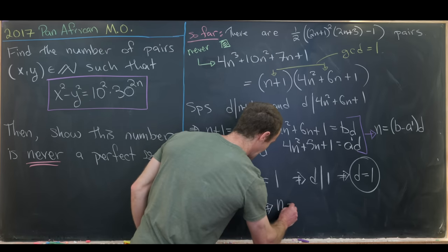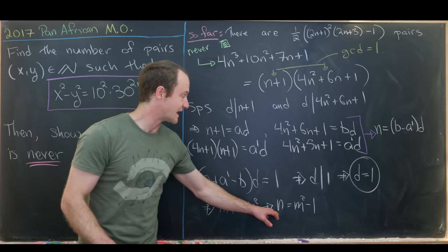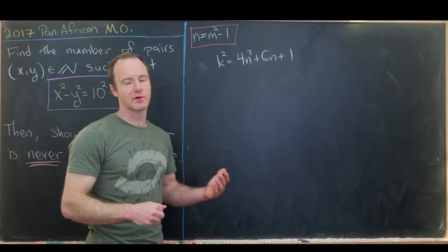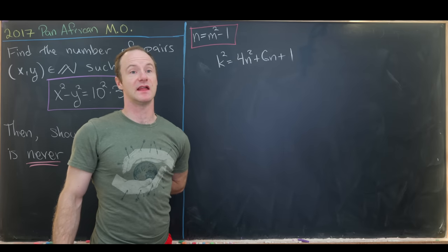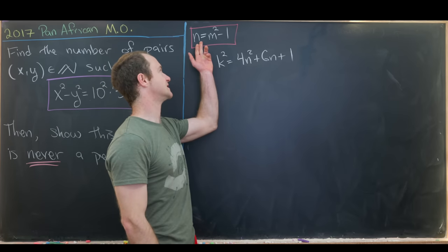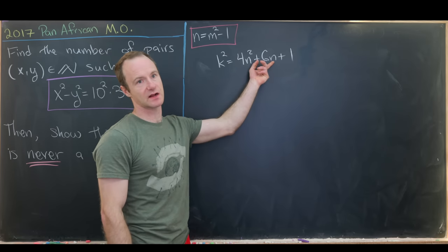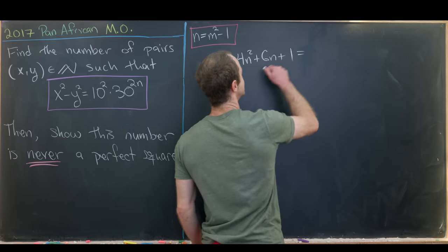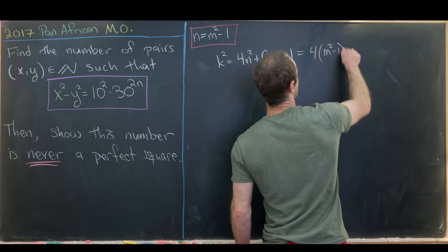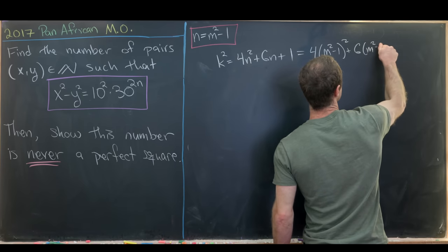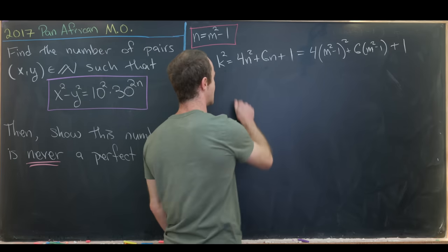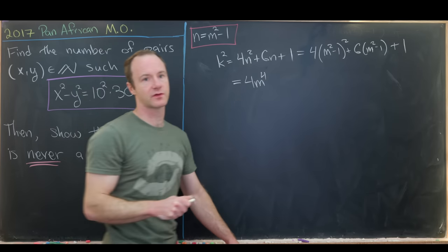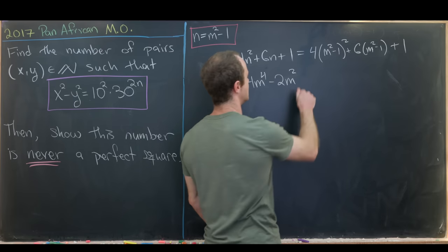From n+1 = m², we get n = m² − 1. Substituting into 4n² + 6n + 1 gives 4(m²−1)² + 6(m²−1) + 1. Expanding this yields 4m⁴ − 2m² − 1, and this must equal k².